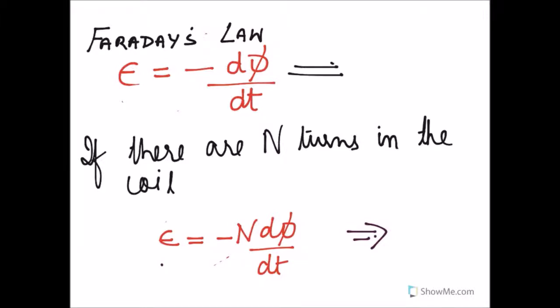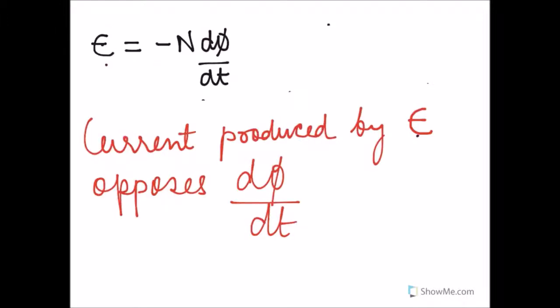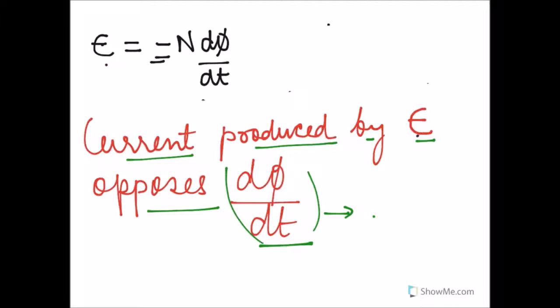This is the mathematical expression of Faraday's law: induced EMF equals minus d-phi/dt. If there are N turns in the coil, then induced EMF equals minus N d-phi/dt. The negative sign indicates that the current produced by the induced EMF opposes d-phi/dt. That is the reason we put a minus sign in the mathematical expression.